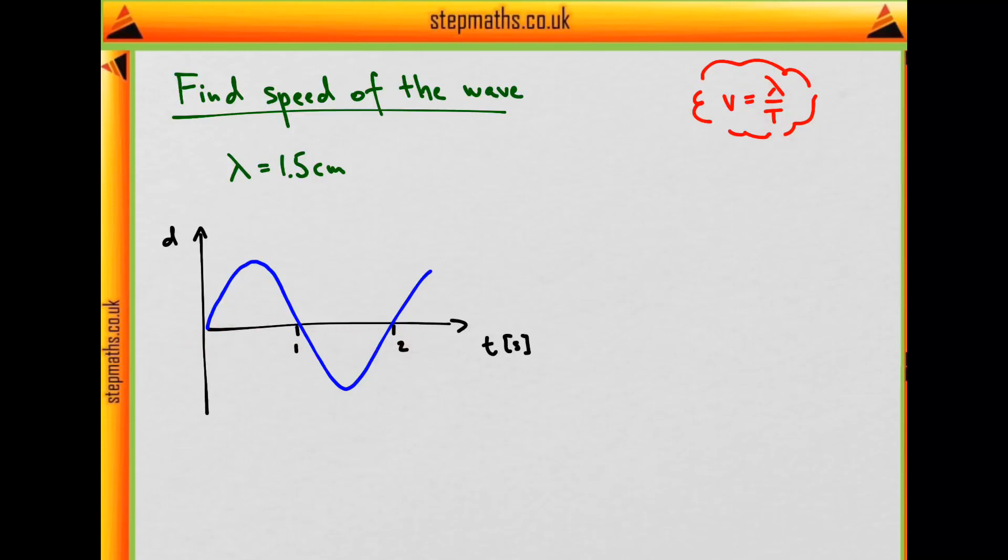So one full oscillation is from this point to 2 seconds, which means that the period is 2 seconds.